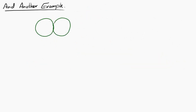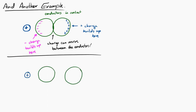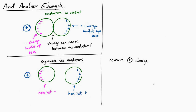Now let's have two conductors in contact with each other, and bring a positive charge near the left side of the left conductor. Since the conductors are in contact, charge can freely move between them — negative charge builds up on the left side and positive charge on the right side. If we then separate the two conductors while the positive charge is still nearby, the left conductor is left with a net negative charge and the right conductor with a net positive charge.